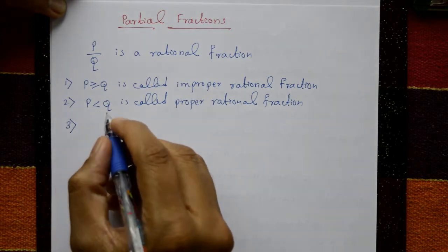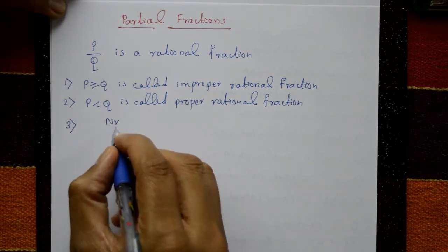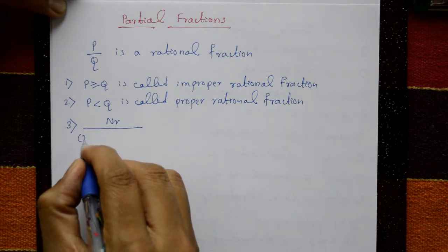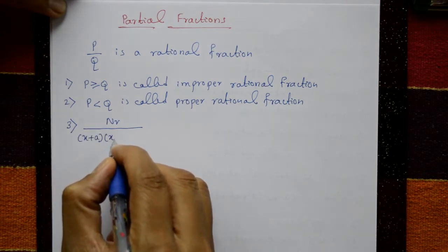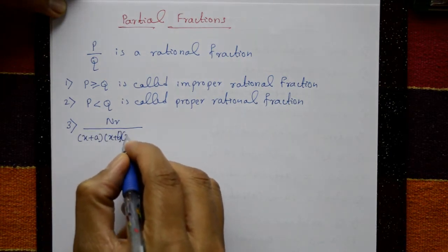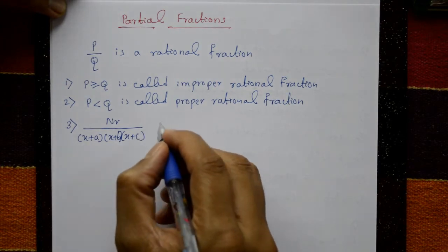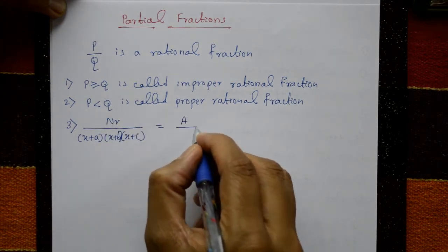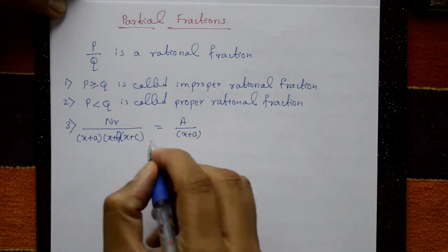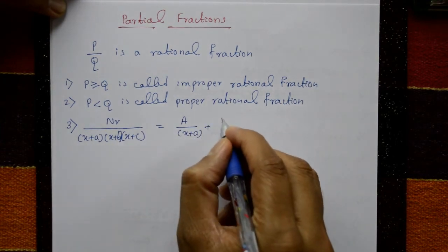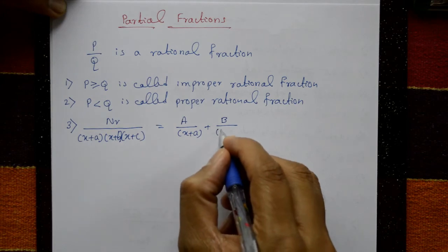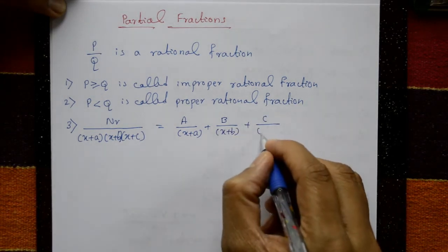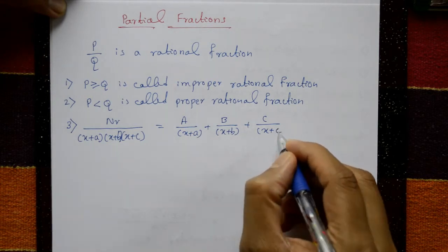Third point: when the denominator has distinct linear factors like (x+a)(x+b)(x+c), you split it like this — A upon (x+a), plus B upon (x+b), plus C upon (x+c).